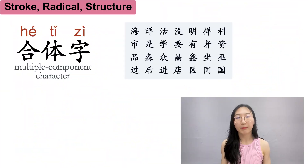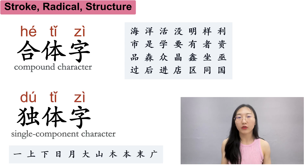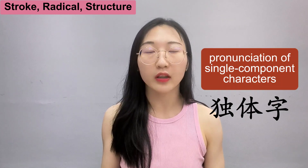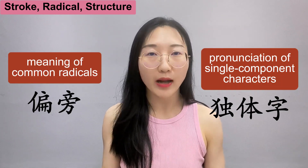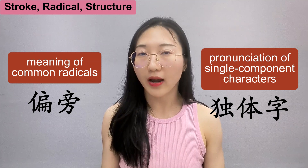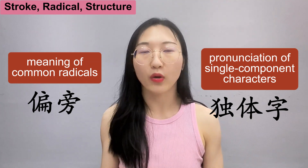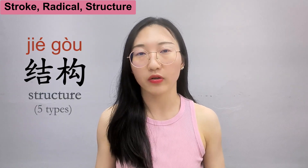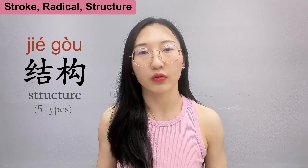Most characters are multiple-component characters, also known as compound characters. Only a few characters are single-component characters — they consist of fewer strokes and are simpler to write, but they are very important because many of them are the sound component in a phono-semantic compound. So by remembering the pronunciation of single-component characters and the meaning of common radicals, you may have a good chance of guessing the meaning as well as the pronunciation of a character. There are five types of structures of compound characters, which can be subdivided into nine types.